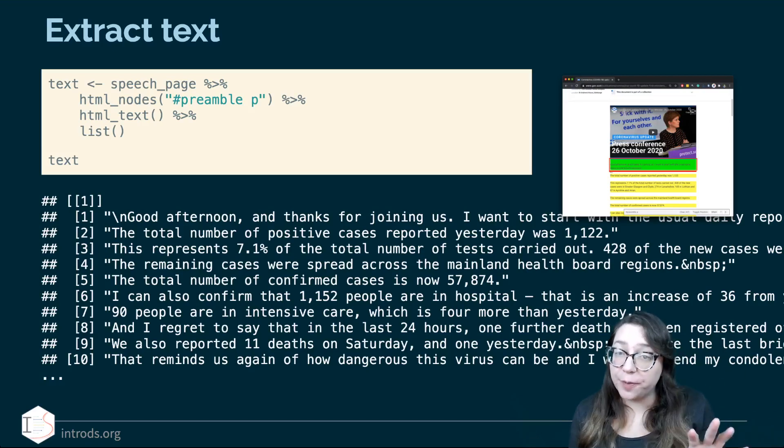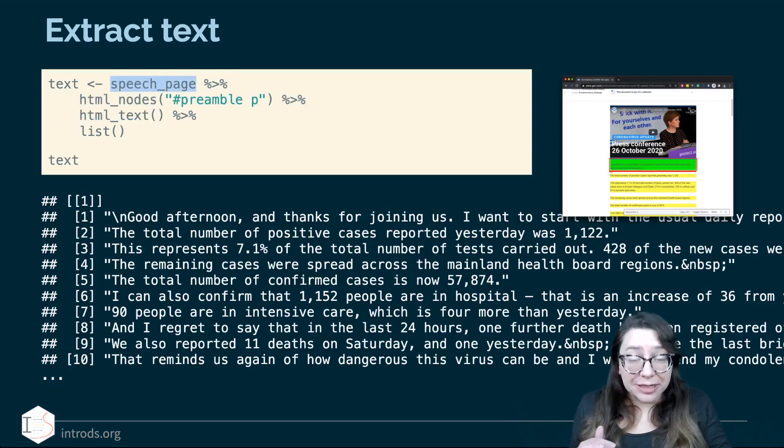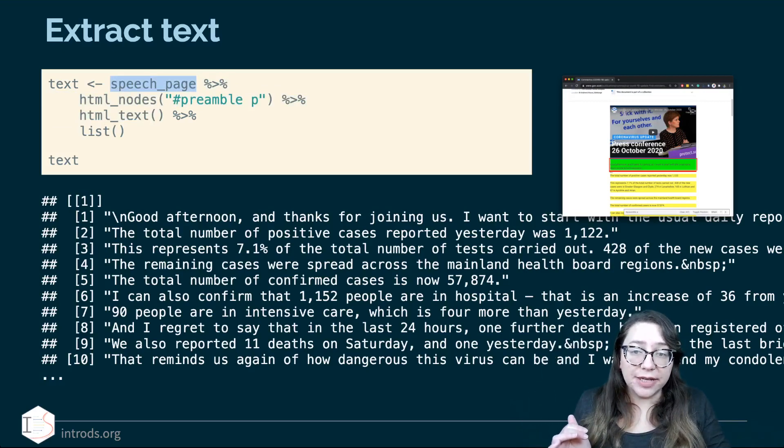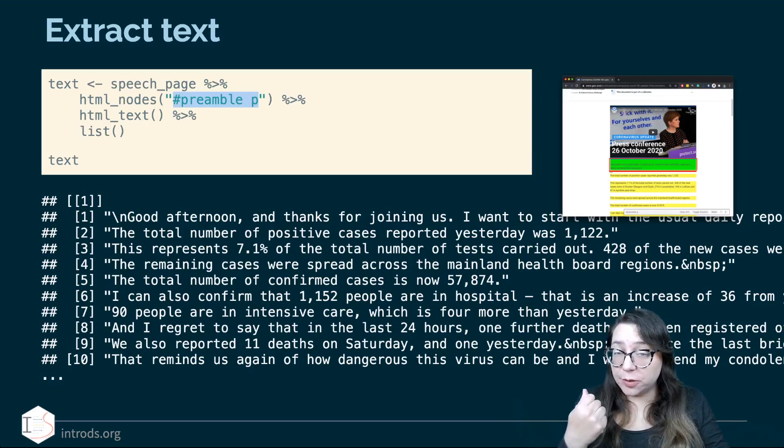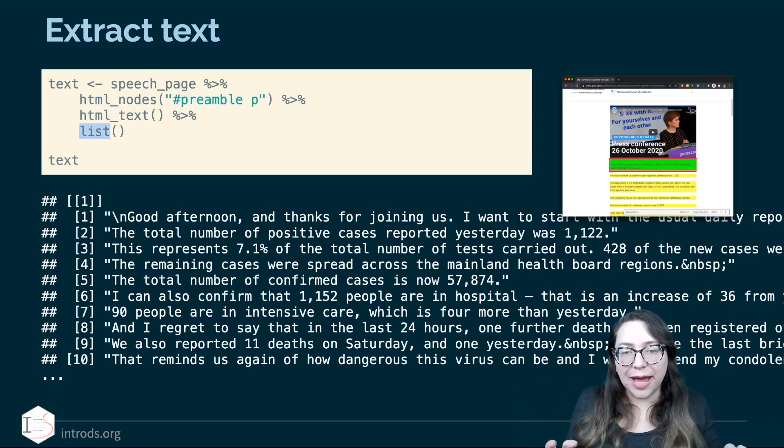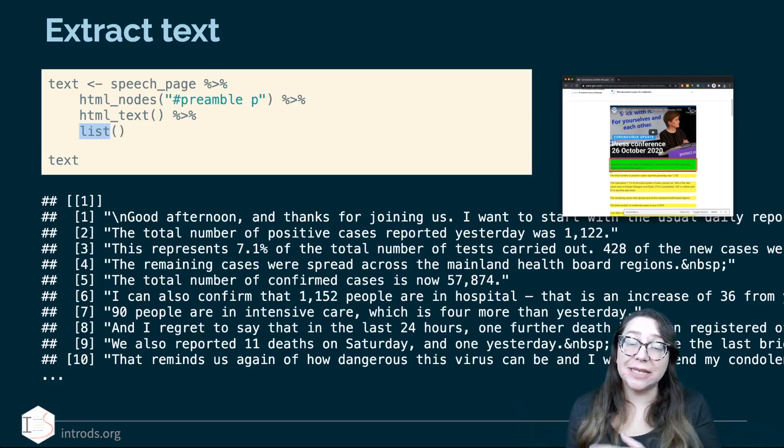So this time actually the information is much bigger but how we get to that information is exactly the same right. So we basically start with the speech_page again and then we take out now multiple nodes because there are multiple paragraphs that are identified by this #preamble p selector. So that's something again I'm using the selector gadget to do that. So if you would like to go to this web page and click around until you get to the same selector that'll give you a sense of the process. Get the nodes out multiple nodes because of multiple paragraphs extract the text out and then finally I'm going to save this as a list because it has multiple elements in this one cell that I want to store in my data frame so I'm going to save that as a list object. So the text basically is the text of the entire speech that Nicola Sturgeon gives at the very beginning of this briefing before the Q&A basically.